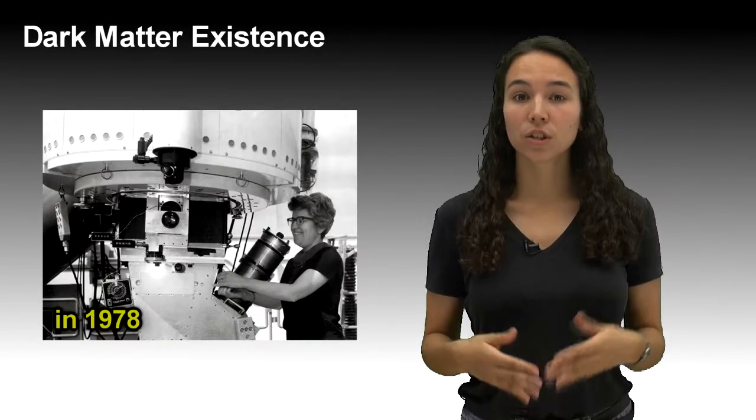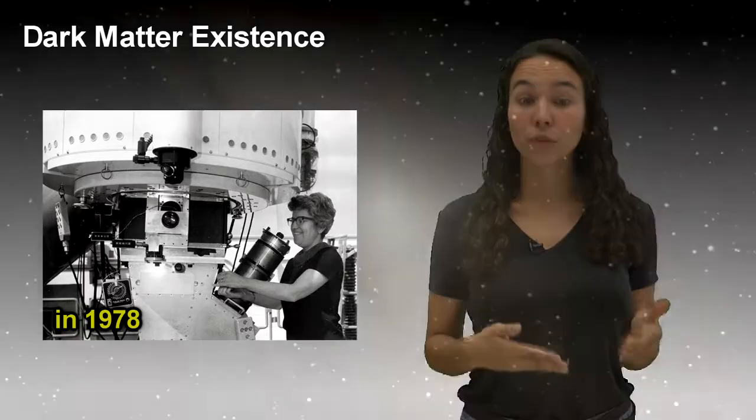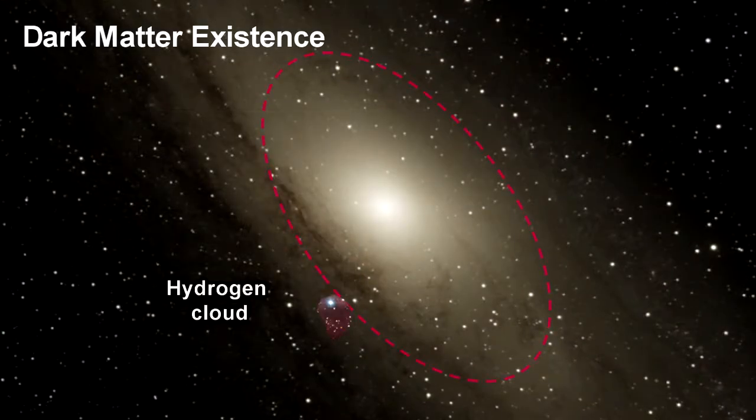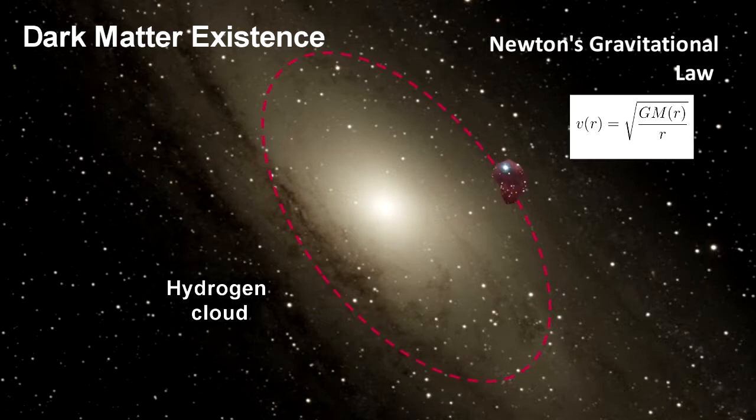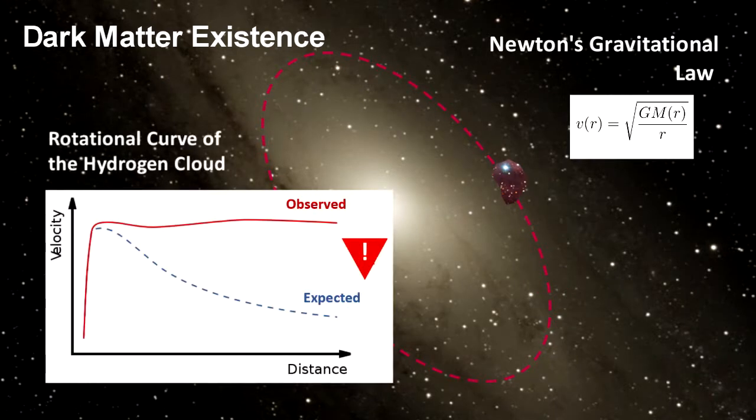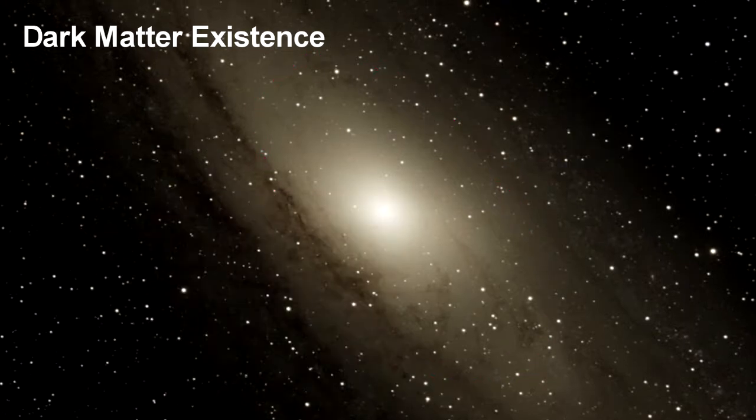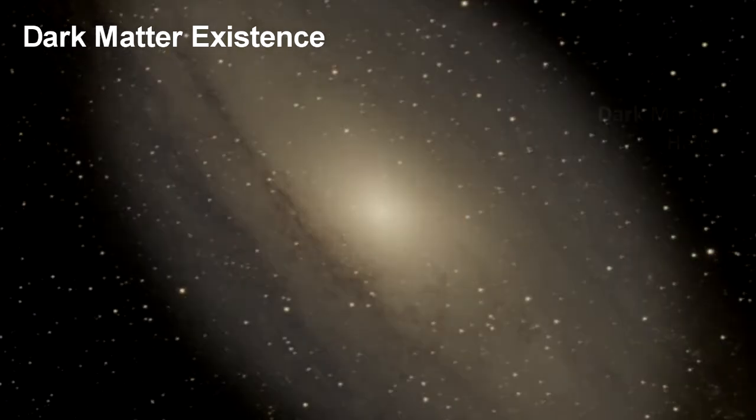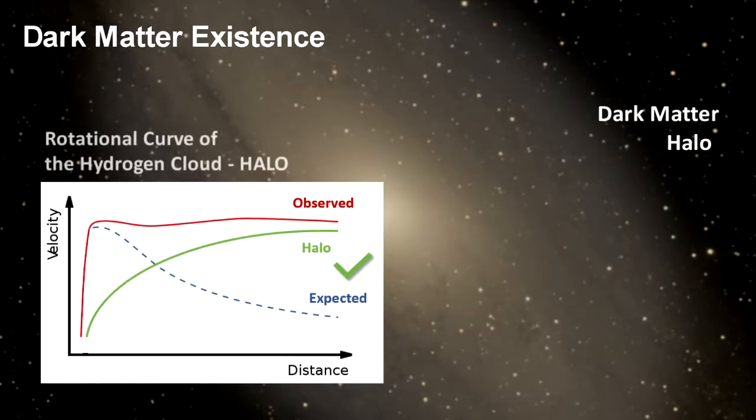Almost 40 years ago, the astronomers Vera Rubin and Kent Ford were measuring the velocity of hydrogen gas clouds orbiting the Andromeda Galaxy. For their surprise, they found that the rotational curves obtained didn't agree with Newton's gravitational law. An explanation for this phenomenon is given by the existence of a massive dark matter halo around the galaxies that balances the increasing distance from the galactic center.